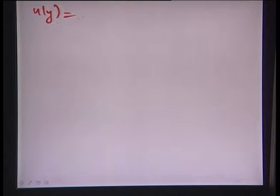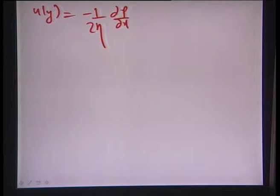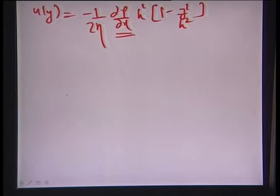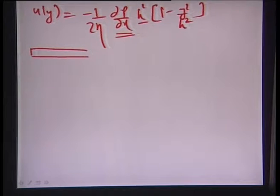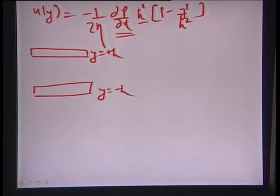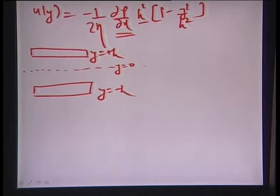The velocity function u obtained was: u = −(1/2η)(dp/dx) · h² · (1 − y²/h²), where dp/dx is the pressure gradient across the capillary in the x direction, and the two plates are fixed at y = +h and y = −h.